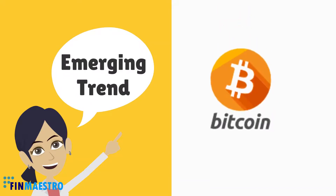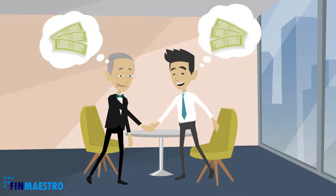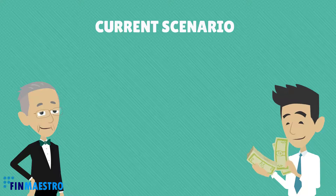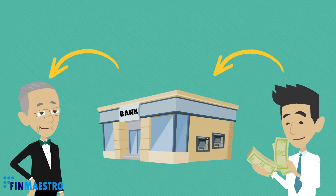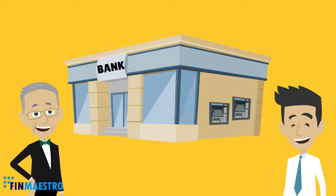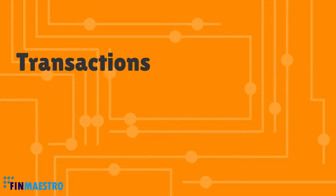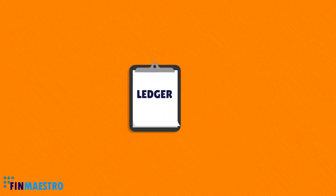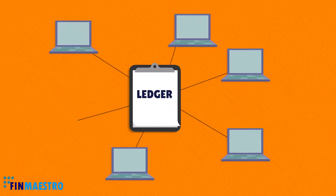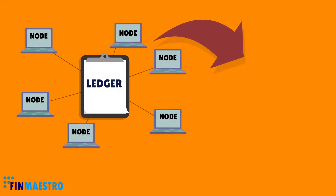Let's understand this through a practical scenario: the Bitcoin blockchain technology. There are two different persons who need to transfer money between them. In the current payment system, this is done with the help of a middleman — banks. Blockchain technology completely eliminates the requirement of an agency or middleman. Transactions like purchase and sale are stored in records called ledgers, which are distributed to all the parties in the network, also called nodes — hence this is called a distributed network.